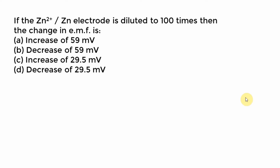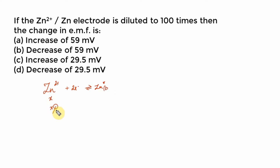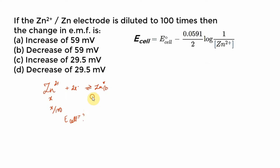Now that we have seen the Nernst equation and concentration cells, let us practice a few more problems. Given: Zn²⁺ → Zn, what happens when I dilute the Zn²⁺ concentration 100 times? The basic equation is Zn²⁺ getting reduced to Zn⁰ solid. Concentration used to be x, now it is x/100. Setting up the Nernst equation: E_cell = E° cell − 0.0591/2 × log(1/[Zn²⁺]) — since Zn solid is unity.